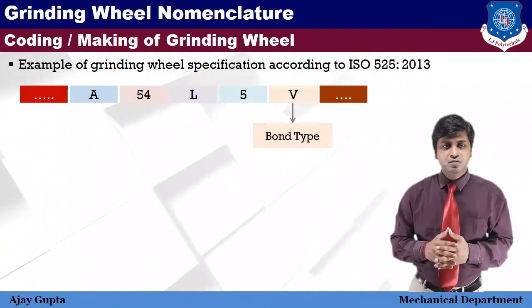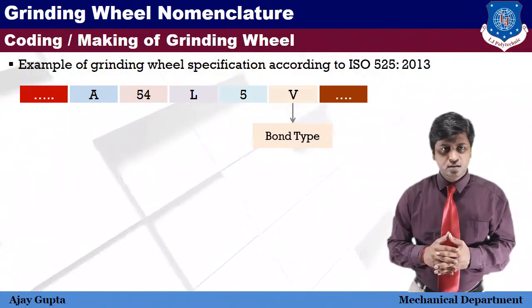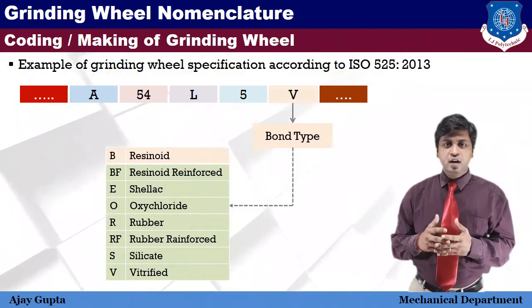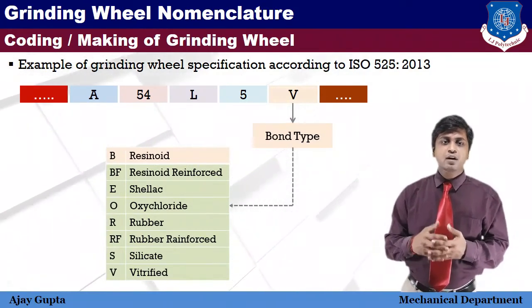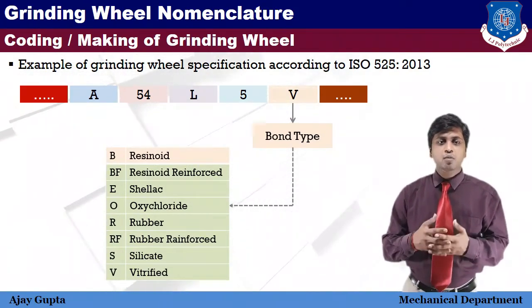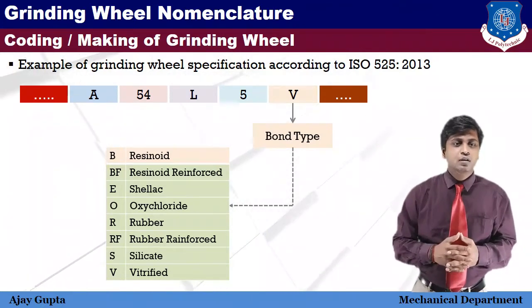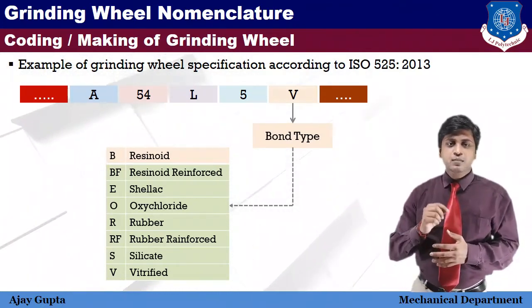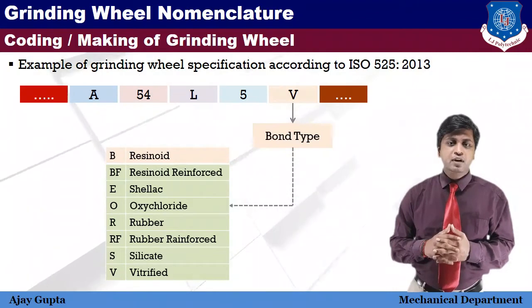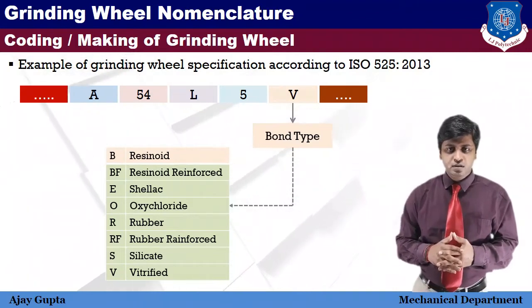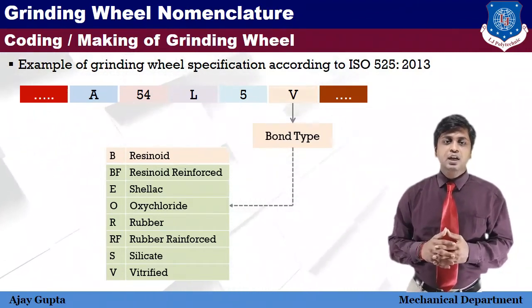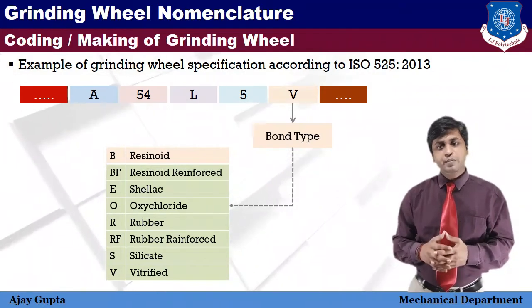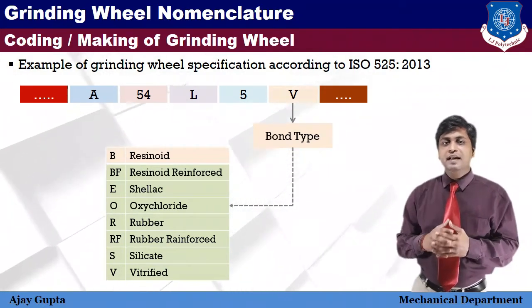The sixth symbol is bond type. Bond is the binding of abrasive particles together with the help of adhesive substances. Different types of bonds include resinoid, rubber, silicate, vitrified, oxy-chloride, and metallic. Selection of bond depends on the type of grinding operation, workpiece material, required bond strength, and contact area of the workpiece with the grinding wheel.